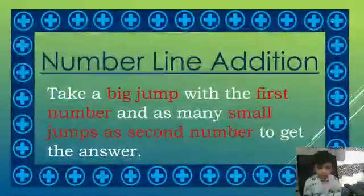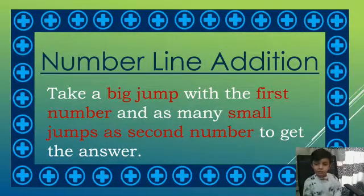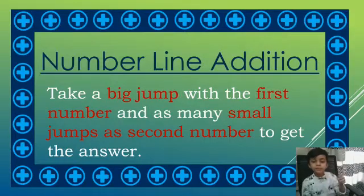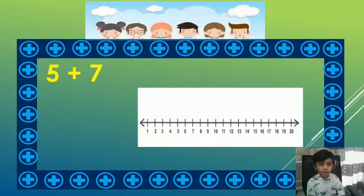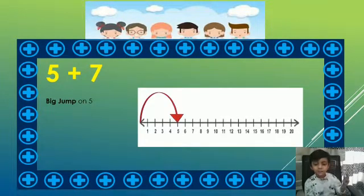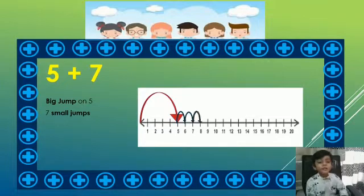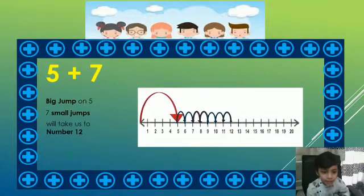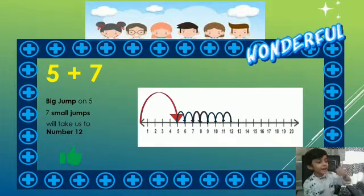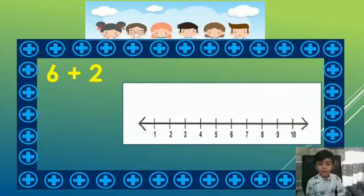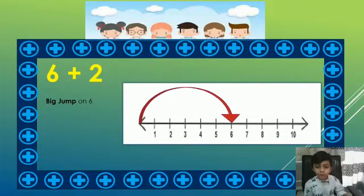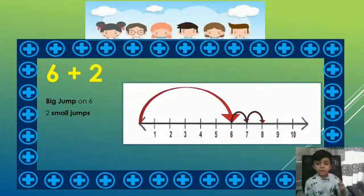We will learn number 9 addition. Take a big jump on the first number and add many small jumps at the second number. Take a big jump on 5 and smash 7 small jumps — that will make number 12. Take a big jump on 6 and 2 small jumps.